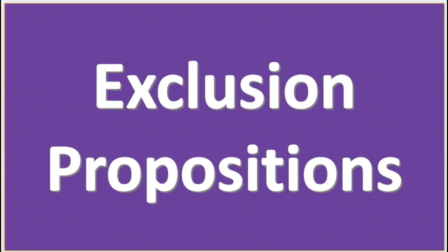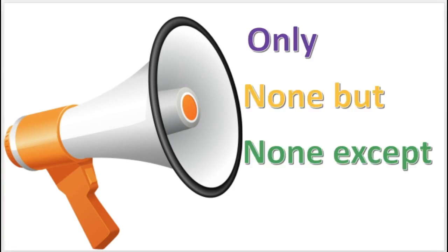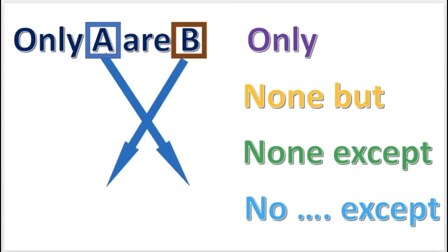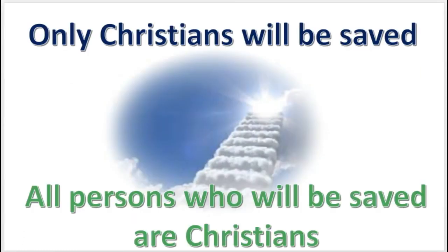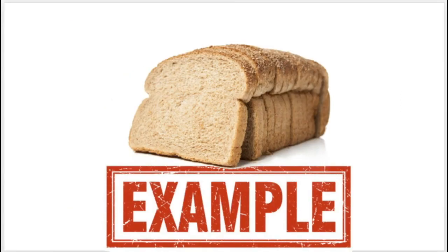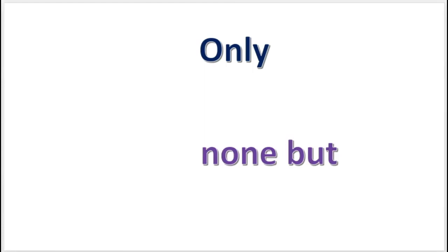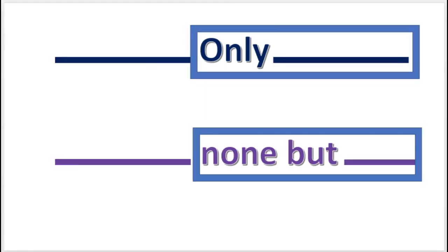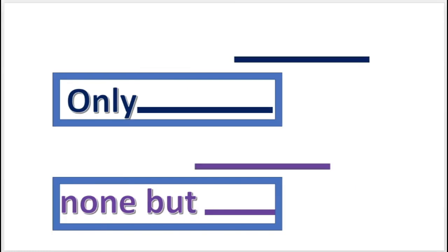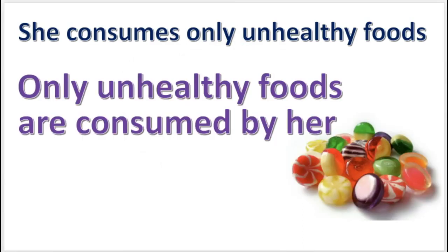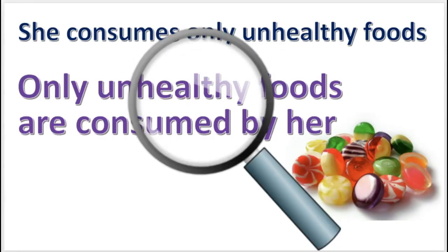The next topic is about exclusion propositions — propositions that involve the words 'only,' 'none but,' 'none except,' and 'no except.' When a statement begins with one of these words, the terms must be switched in the translation. When 'only' or 'none but' occur in the middle of the statement, the entire component should be moved to the beginning, and then the statement can be translated.